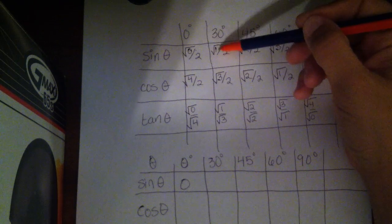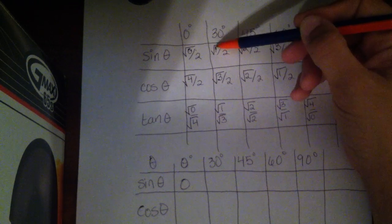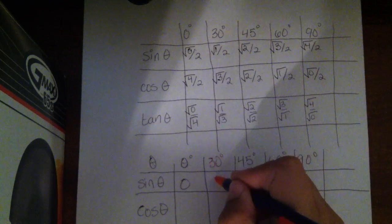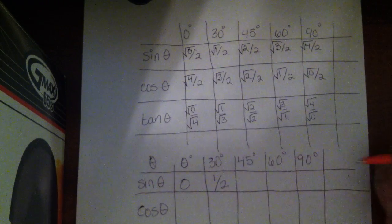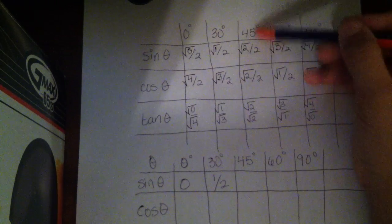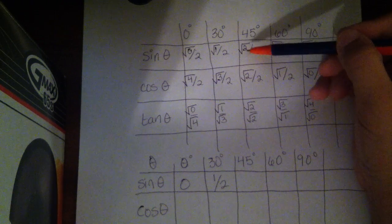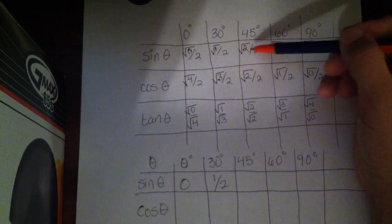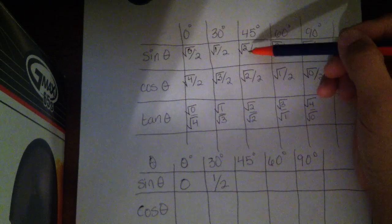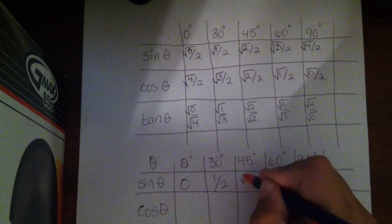For the sine of 30, the square root of 1 is 1, and 1 divided by 2, that's just a half, and we're going to leave it as a fraction. The sine of 45, square root of 2 doesn't simplify. 2 is not a perfect square, and we're not going to change these to decimals, so I'm just going to leave that as square root 2 over 2.